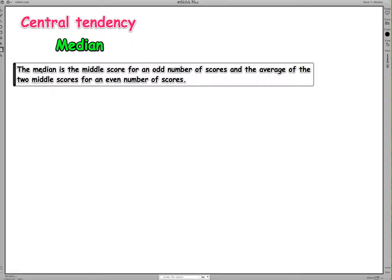So how do we calculate it? Well, the median is the middle score for an odd number of scores, and the average of the two middle scores for an even number of scores.